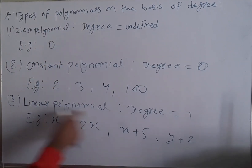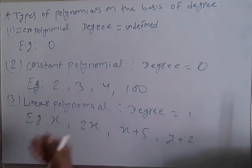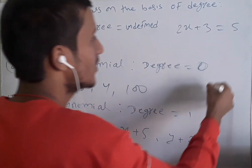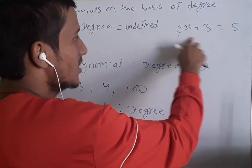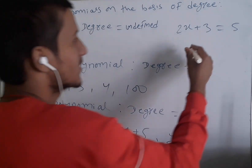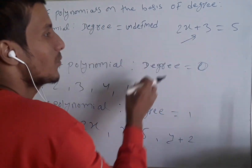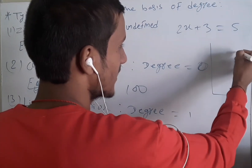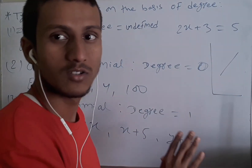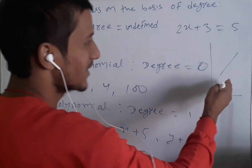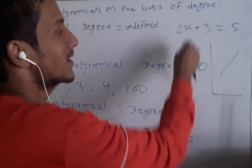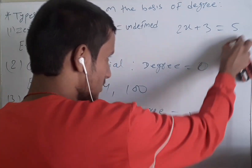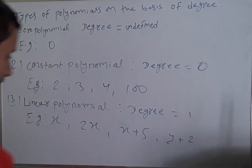An interesting fact about linear polynomials is that if you form an equation using a linear polynomial — for example, 2x plus 3 equals 5 — this is a linear equation, because it consists of a linear polynomial. If you graph a linear polynomial, it will always produce a straight line on the graph paper. When the degree is one, it always makes a line on the graph.